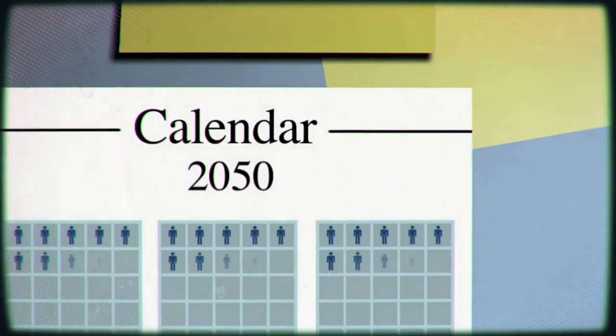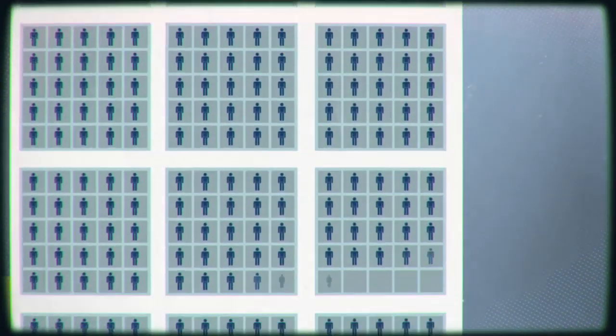By 2050, nearly 20 million Europeans will have it. Can you avoid this happening to you? Well, almost three-quarters of people with dementia have Alzheimer's disease.